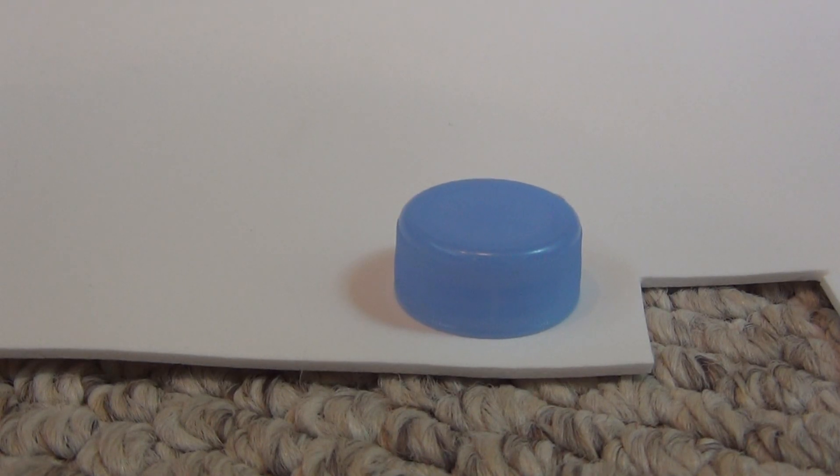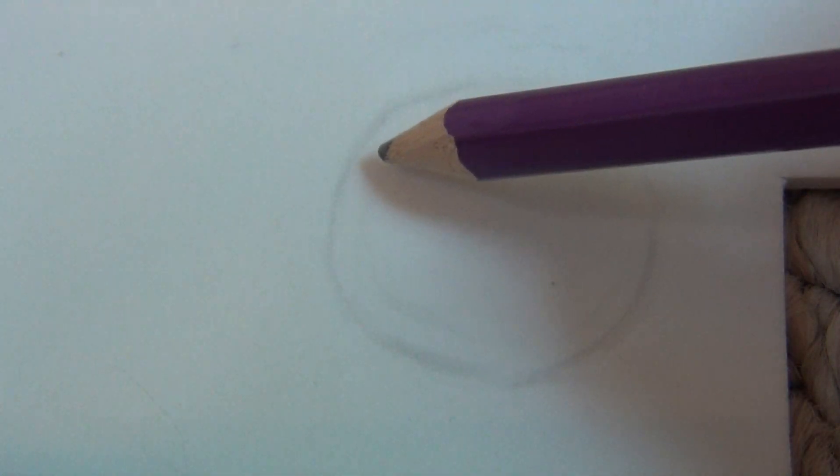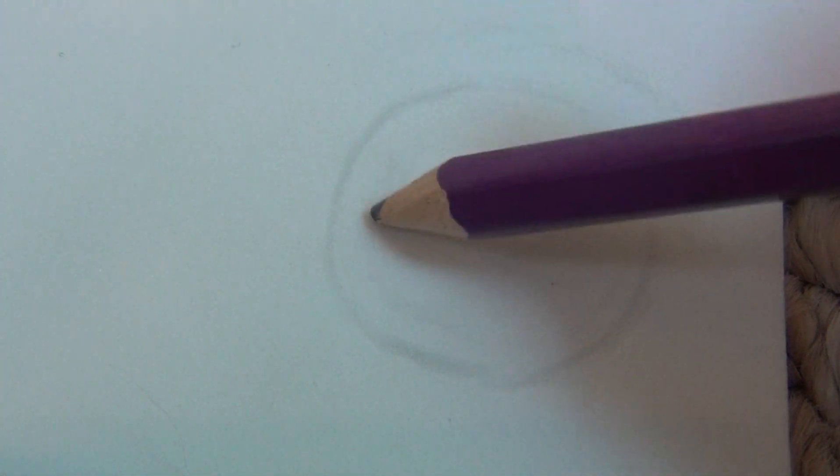First, take your cap and make a print in the foam. Take the cap off. If you're using a pencil, draw a circle almost touching your first circle.